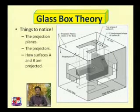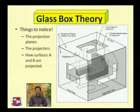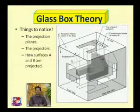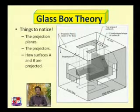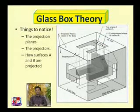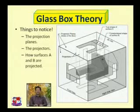Now, things to note: the projection planes like this — first of all, decide the plane of projection. The projectors, or projection lines, are these lines here. Think about how surfaces A and B are projected. Surface A is parallel to this plane, hence its shape would remain as it is.